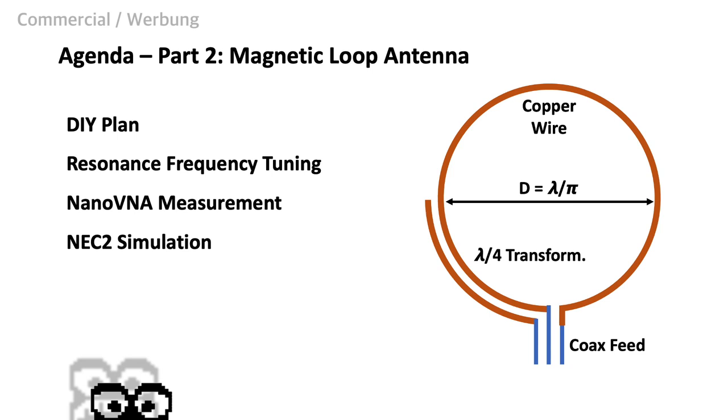Then, I will present the impedance and SWR measurements to give you an idea what you could achieve. Finally, we want to understand why our magnetic loop antenna delivers a more stable RSSI. For this purpose, we will analyze the radiation patterns in three-dimensional space using the program NEC2.